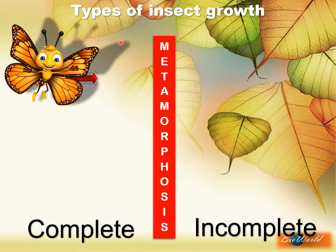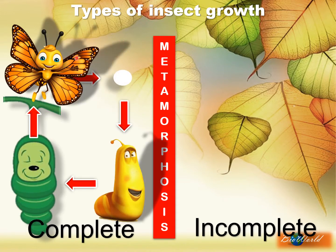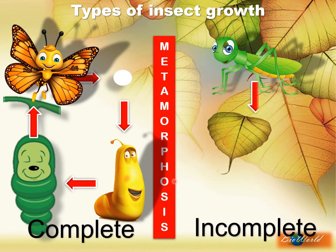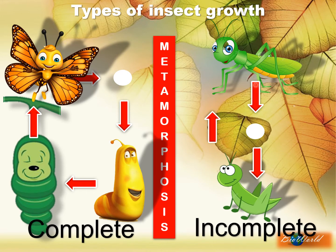The butterfly does complete metamorphosis, where at each stage of its life cycle it takes a different shape. The butterfly lays the egg, and when the egg hatches a larva is produced. That larva will then go to sleep in the form of a pupa, and when the pupa awakes it becomes an adult butterfly. Whereas the grasshopper does incomplete metamorphosis, where once the egg hatches a mini grasshopper is produced, and this mini grasshopper will grow into the adult grasshopper.